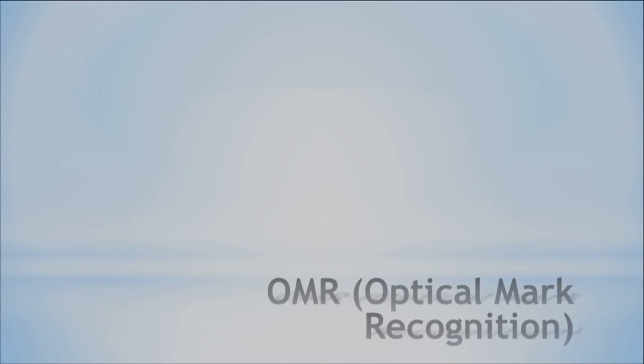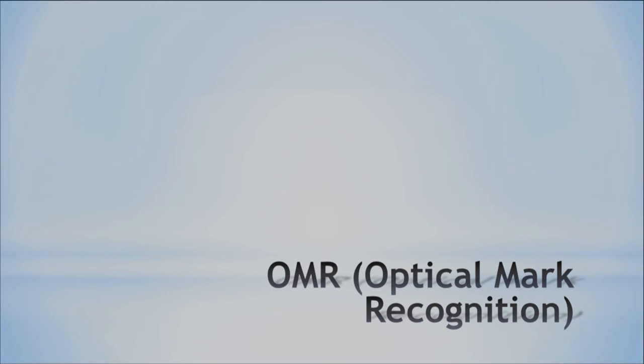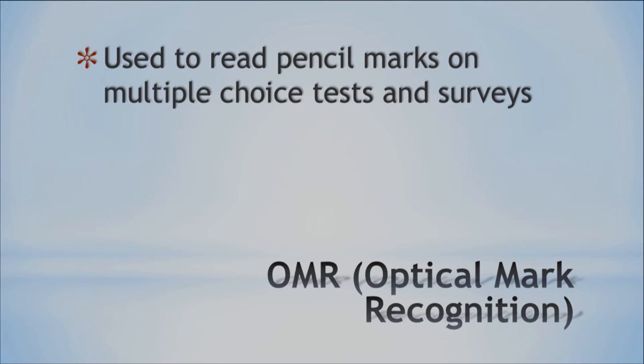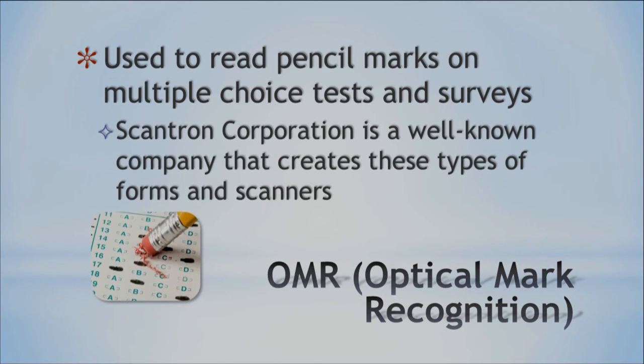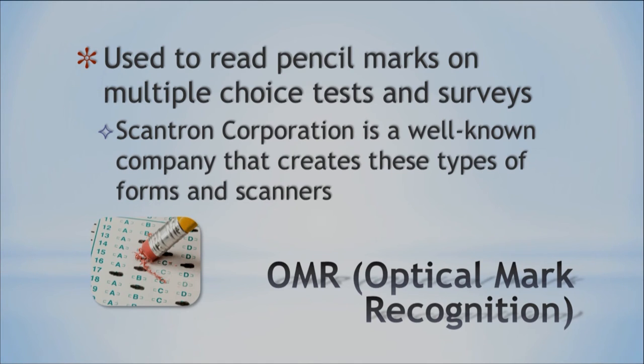Last is OMR — Optical Mark Recognition — a device that's been around a while and is still used today. These are used to read pencil or pen marks on multiple choice tests or surveys. One well-known corporation is called Scantron — it's almost a household name. Instead of saying OMR, people just say Scantron. They create the tests, the forms, and the scanners. Typically it's a green and white sheet where you mark your answers. That was very popular back in the day, and you still see it — even on airplane arrival forms coming back to Hawaii.